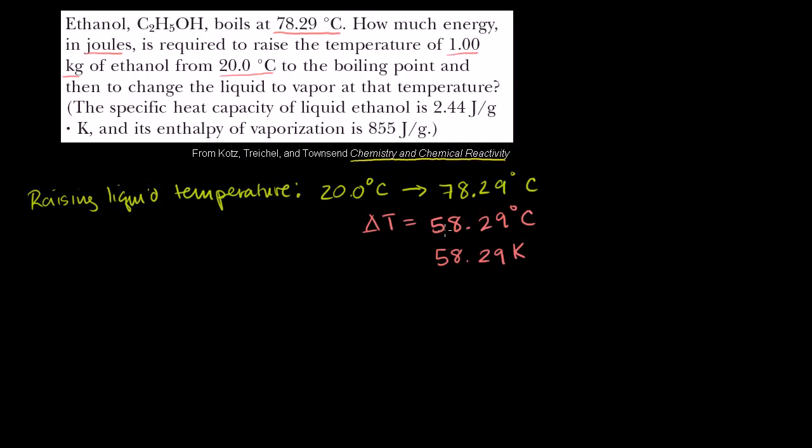We could actually be 58.29 degrees Celsius, or this could even be 58.29 Kelvin. The reason we can do that is because differences on the Celsius scale and the Kelvin scale are the same thing. The Kelvin scale is just a shifted version of the Celsius scale. If you added 273 to each of these numbers, you would have the Kelvin temperature. But then if you take the difference, it's going to be the exact same difference.